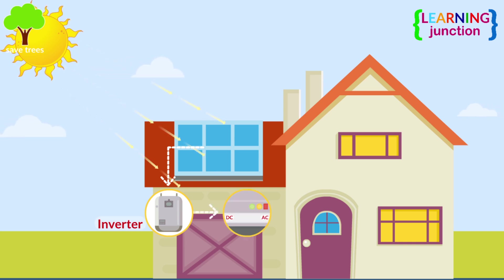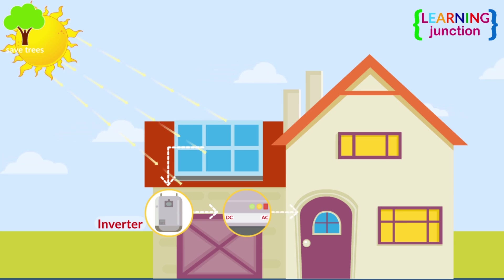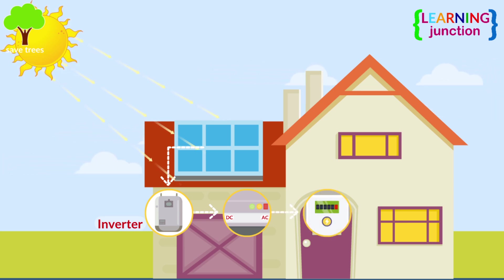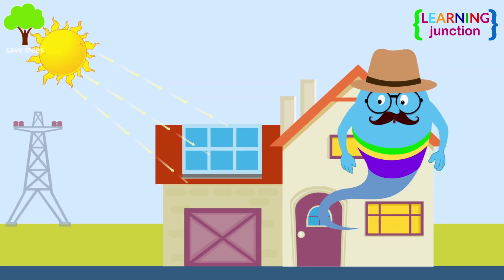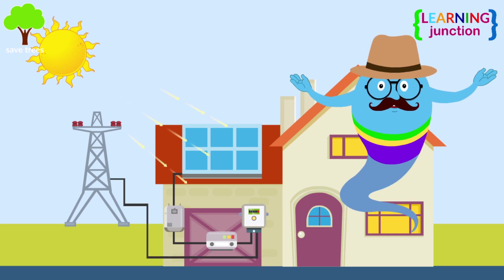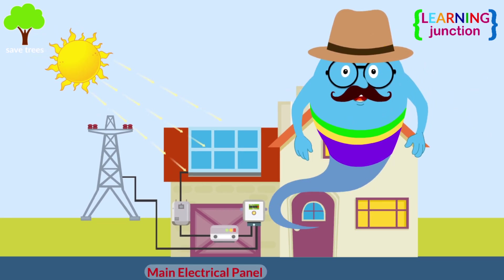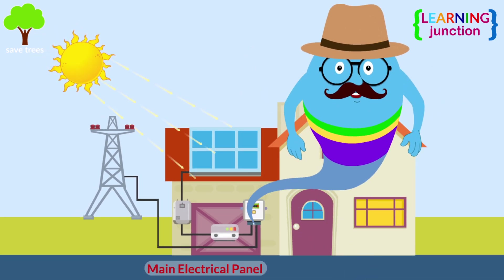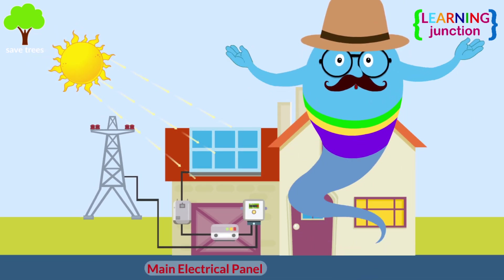The inverter takes the electricity, which is in DC form, and switches it to AC power. Once that switch is made to AC, the electricity is ready for household use. From the inverter, the power is fed directly into the building's main electrical panel and can supply power to the site.